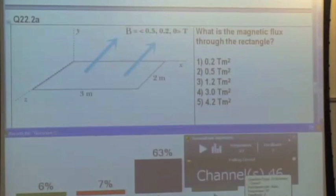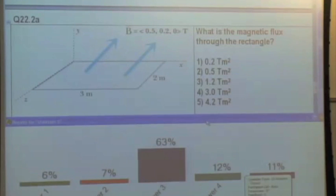We have, okay, we need a little bit of review of flux. Okay, we're converging on an answer here. So, 1.2 Tesla meters squared.